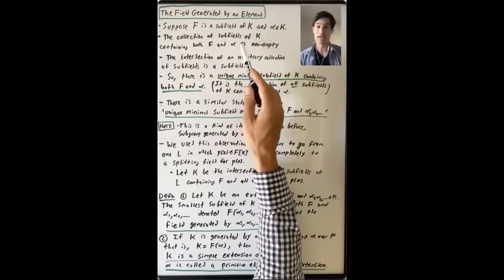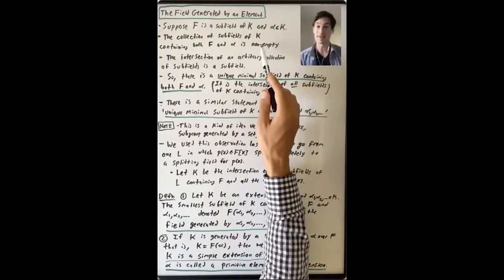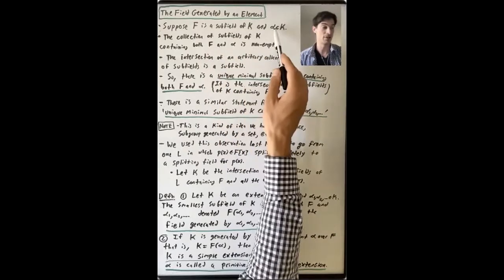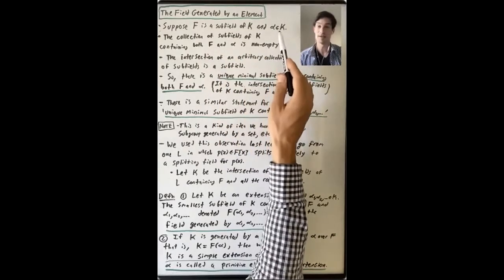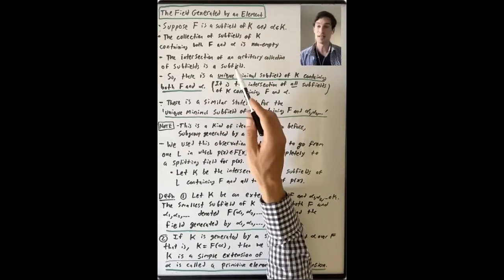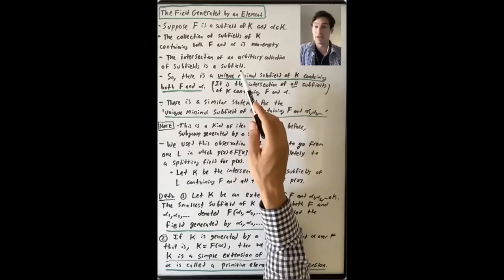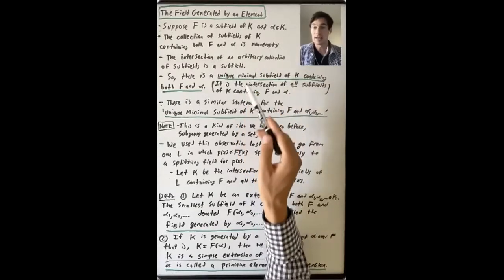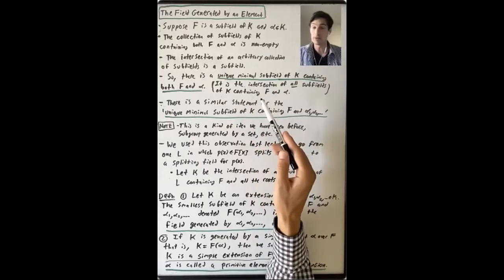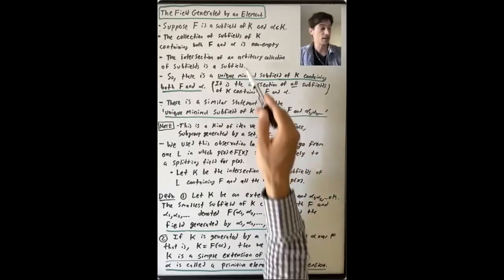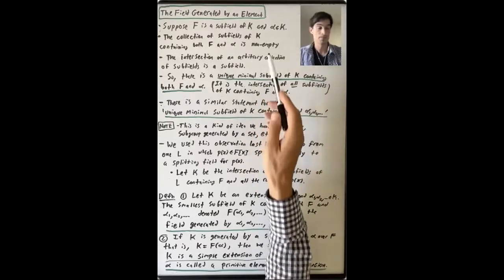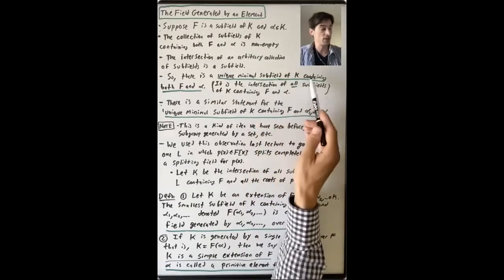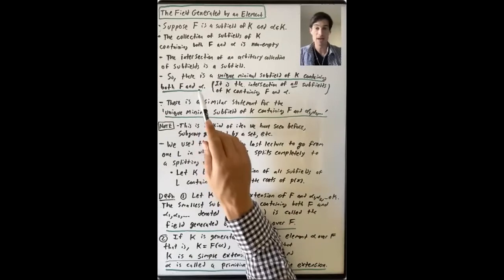What do we know about this collection? Well, it's not empty. K is a subfield of K that contains F and also contains alpha. And we know that the intersection of an arbitrary collection of subfields is again a subfield. It's not just that the intersection of two subfields is a subfield, but if you have infinitely many, this is still true. So what that means is there's a unique minimal subfield of K containing both F and alpha.